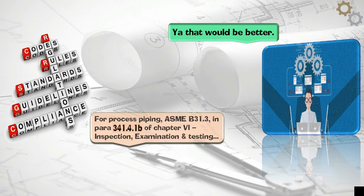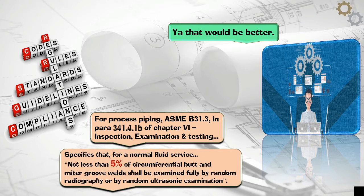For process piping, ASME B31.3, in PARA 341.4.4b of Chapter 6, Inspection, Examination and Testing specifies that, for a normal fluid service, not less than 5% of circumferential butt end mitre groove welds shall be examined fully by random radiography or by random ultrasonic examination.